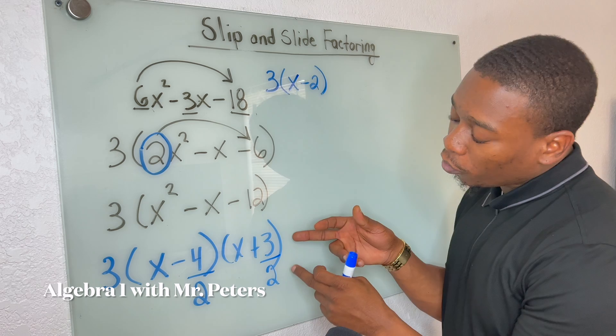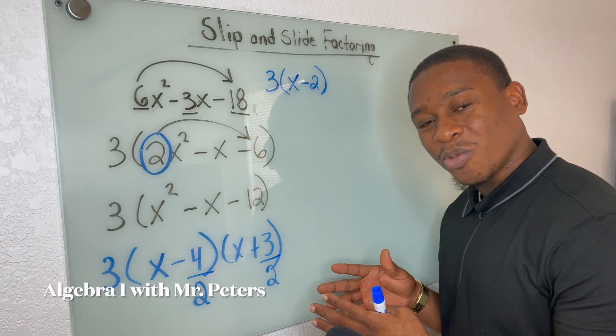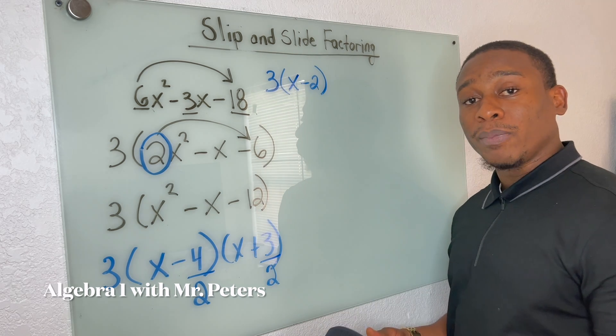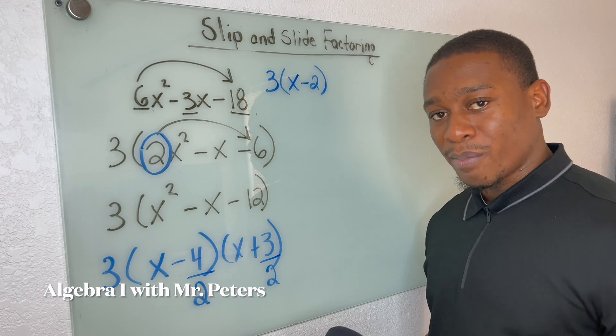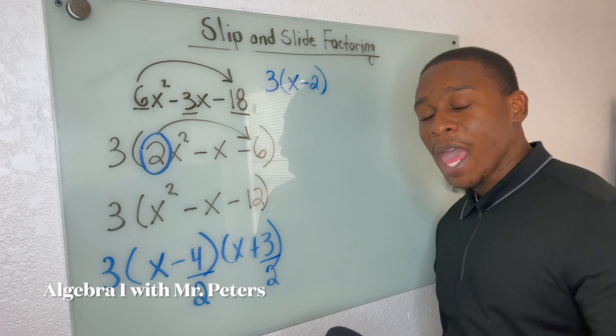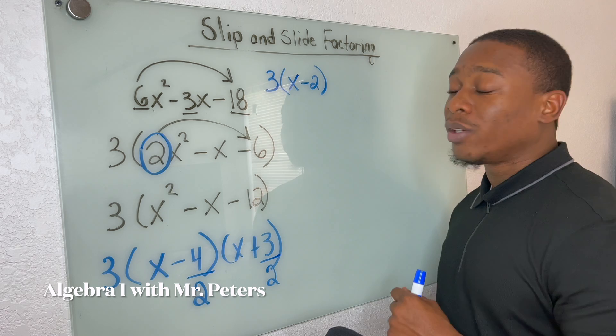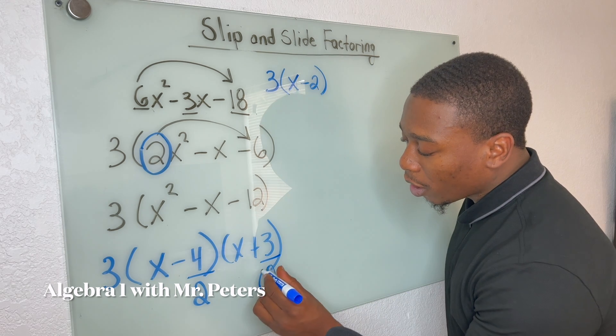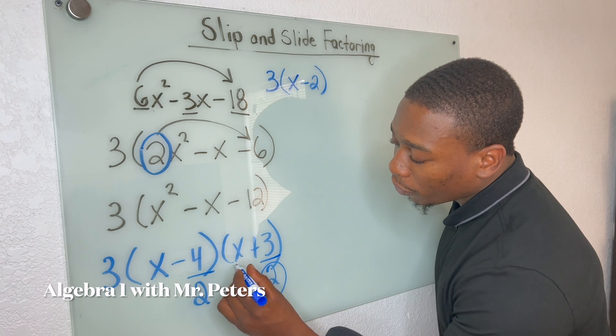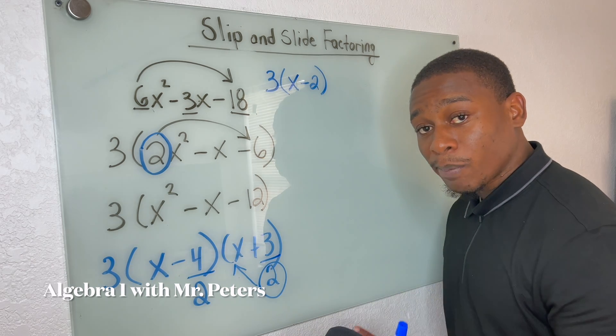But in the second factor, if we notice, we cannot divide three by two and get a whole number. So when that happens, this is what we do. We're going to take that denominator and we're going to put it in front of the variable from the same parentheses.